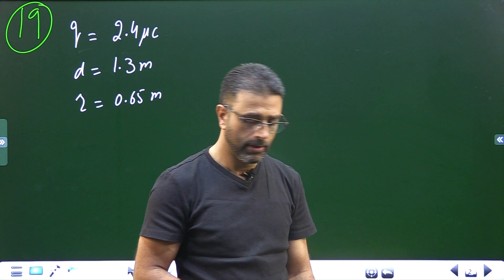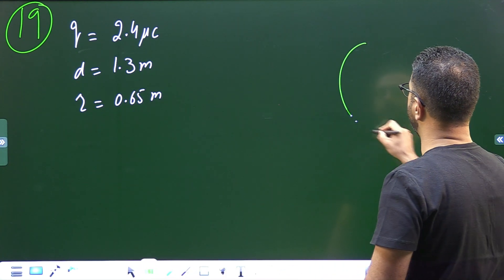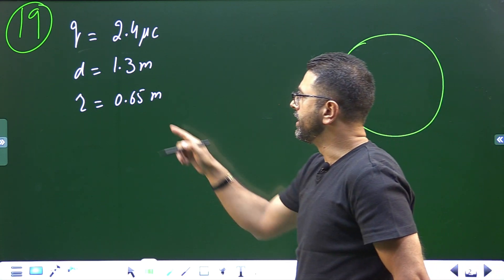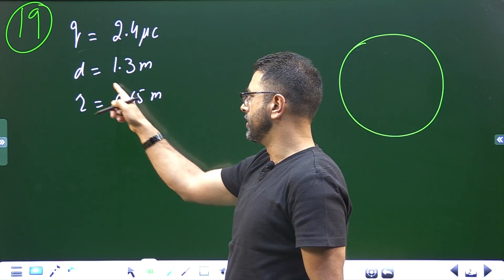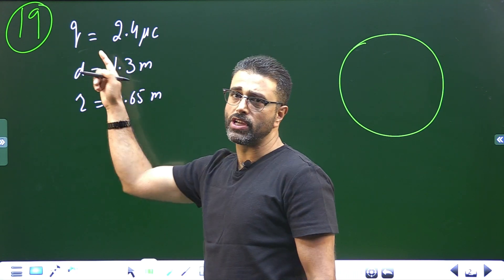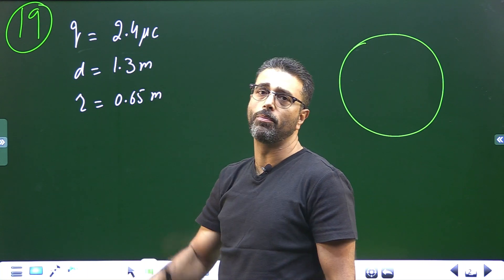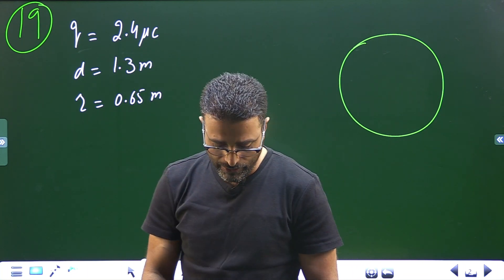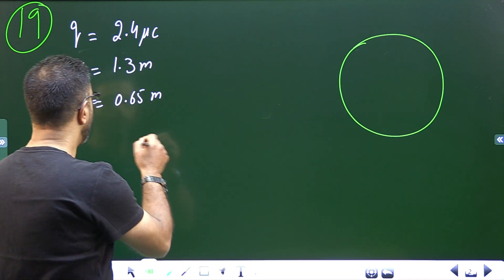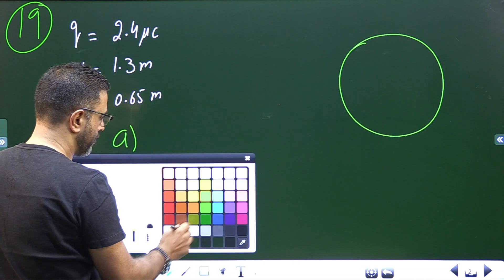We have a spherical metallic satellite with a radius of 0.65 meters — diameter is given as 1.3 m, so radius is half of that. It accumulates a charge of 2.4 microcoulombs in one complete revolution. We need to find the surface charge density for part (a).